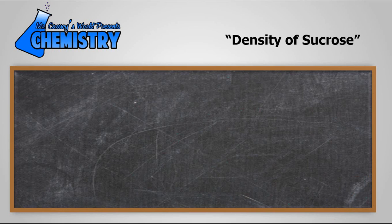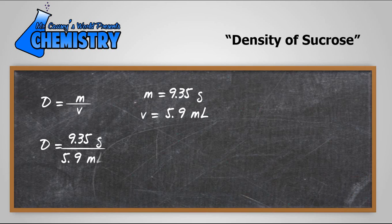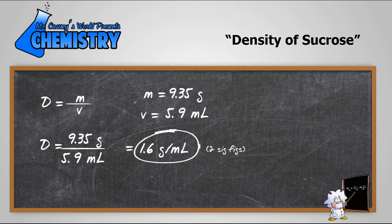Now let's do the density of sucrose. Density of course equals mass divided by volume. The mass of the sucrose is 9.35 grams and the volume is 5.9 milliliters or cubic centimeters. And density equals 9.35 divided by 5.9 and we get 1.6 grams per milliliter with two sig figs.